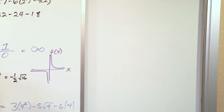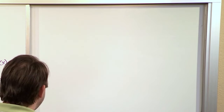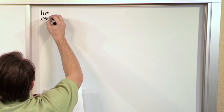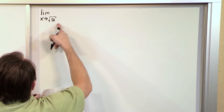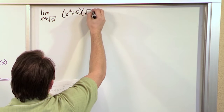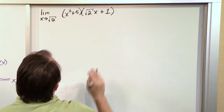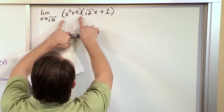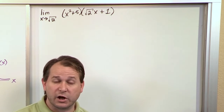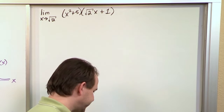The concept here is not crazy difficult to follow, and you already have a lot of experience with this. What if I take the limit as x approaches the square root of 2 of x squared plus 5, times the square root of 2 times x plus 1? Notice that this is one giant function multiplied by another giant function. From the limit laws, when you have two functions multiplied, you take the limit of the first one times the limit of the second one.